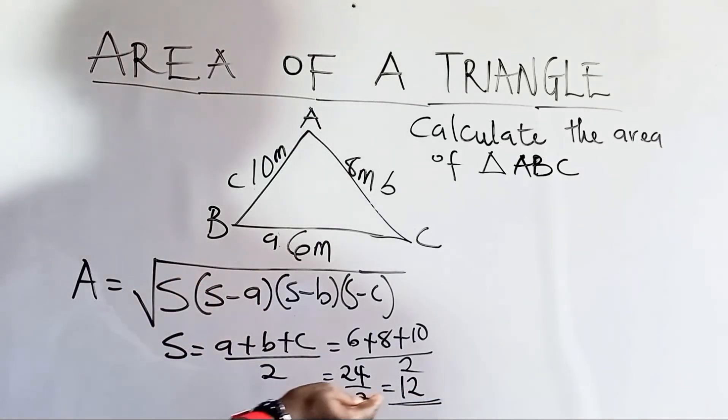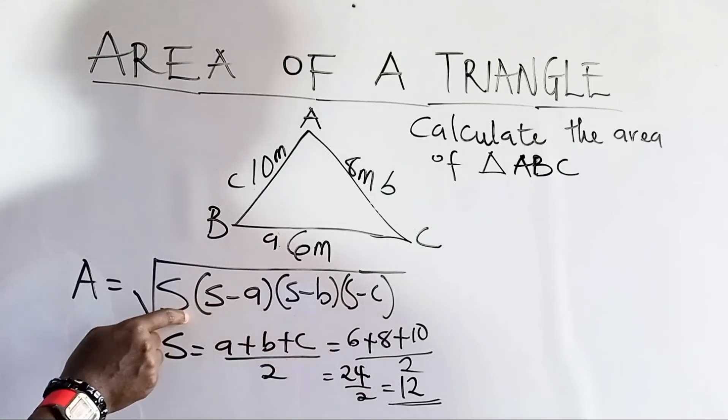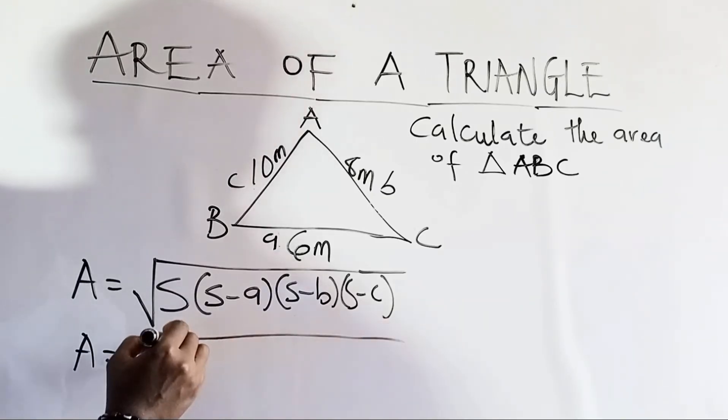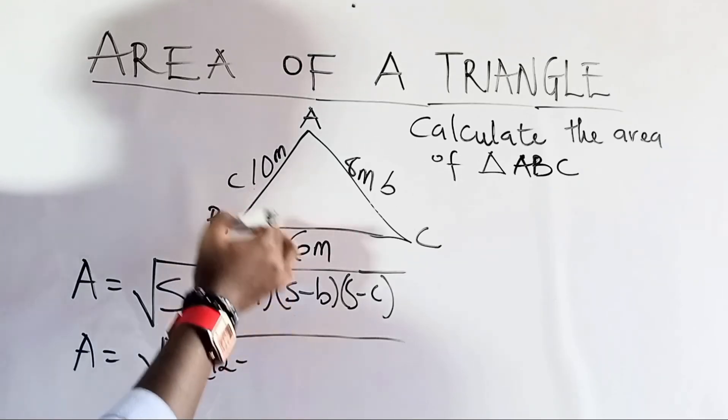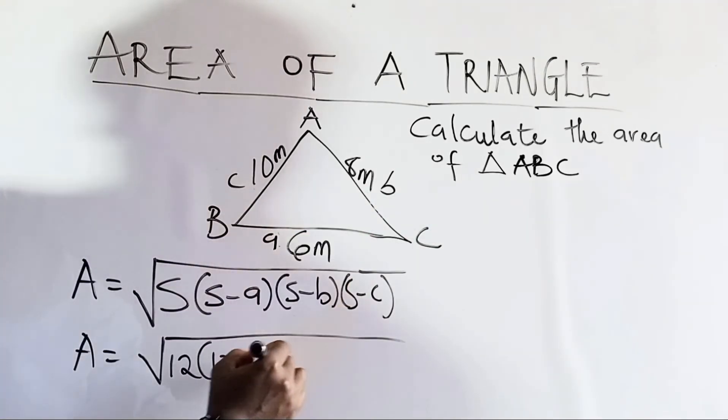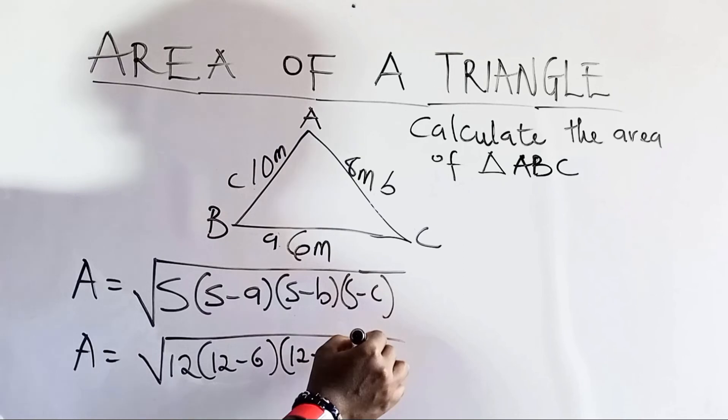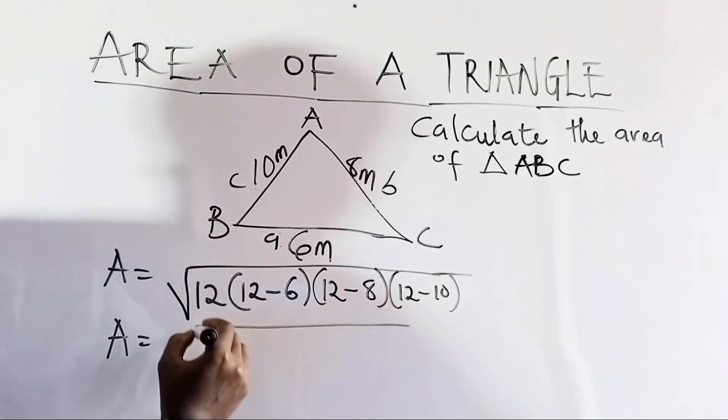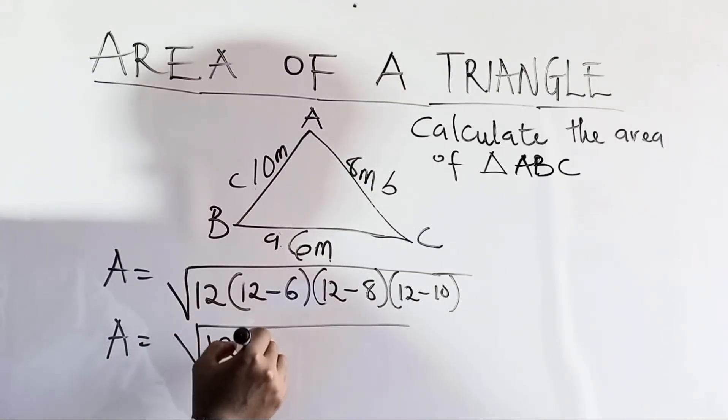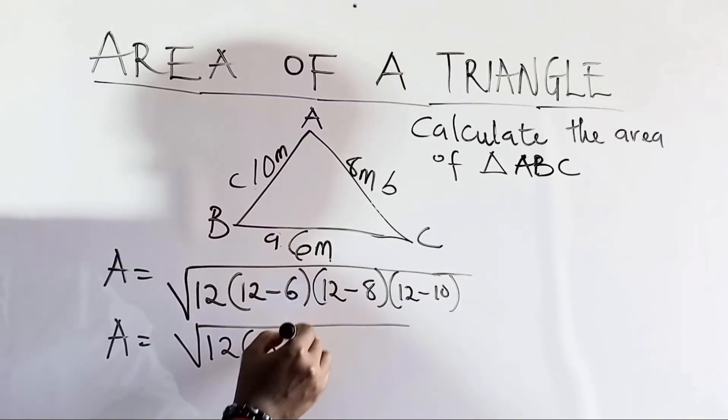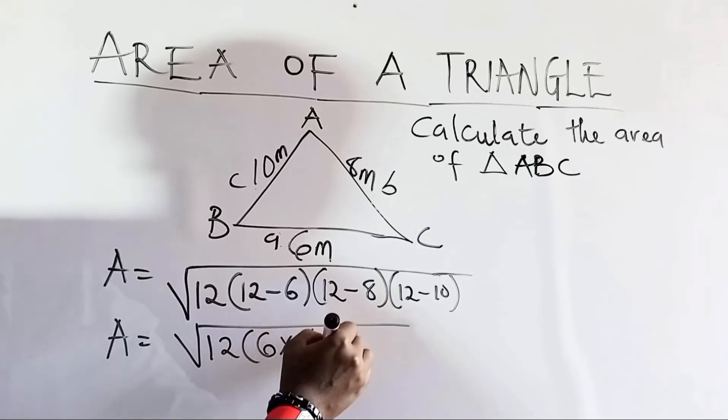So, now we are going to substitute s and put 12. It's now become A equal to the square root of 12 times (12 minus 6) times (12 minus 8) times (12 minus 10). Area now equals to the square root of 12, bracket 12 minus 6 is 6 times 4 times 2.